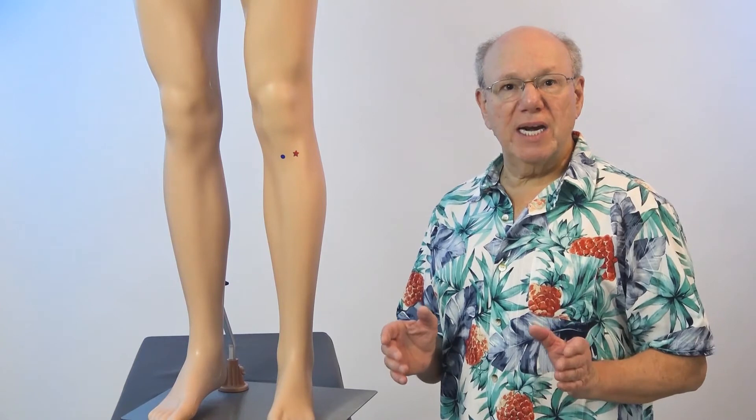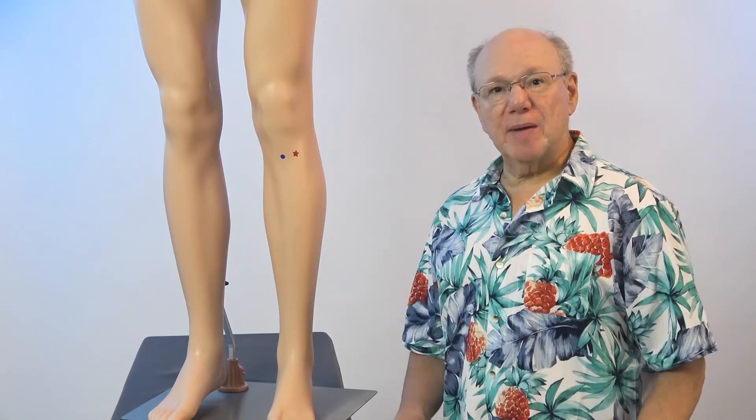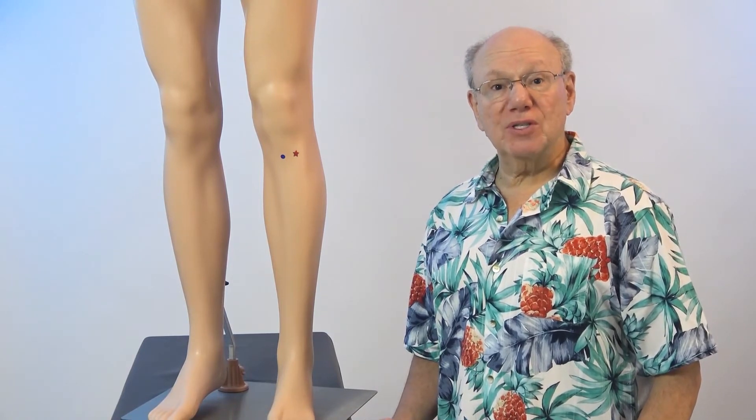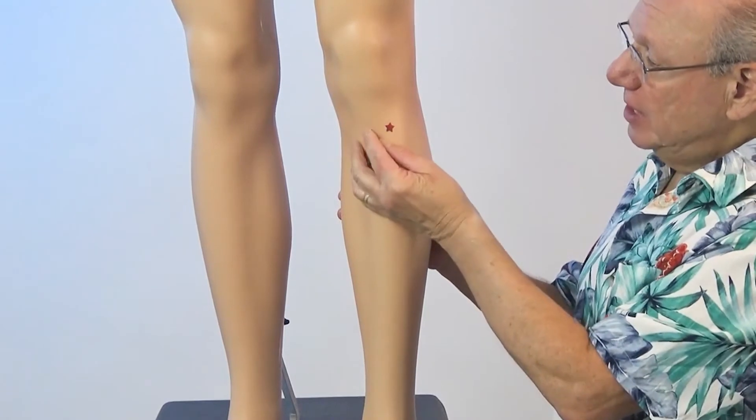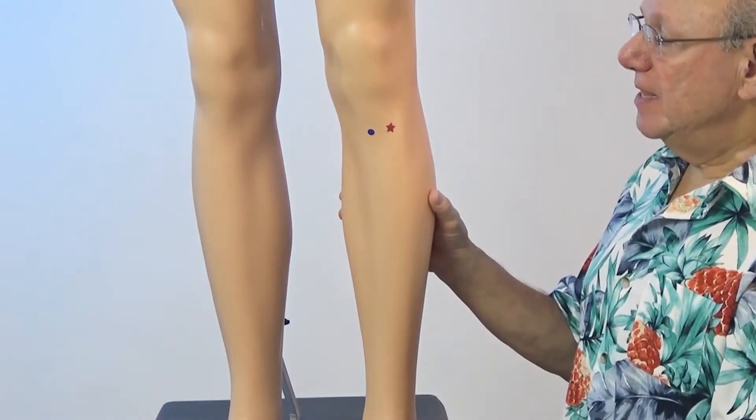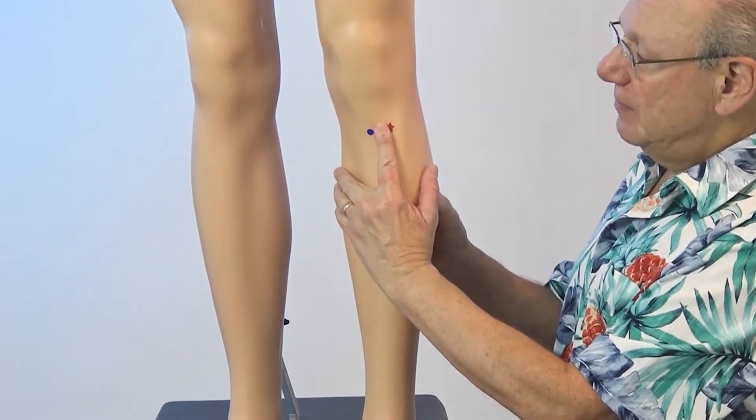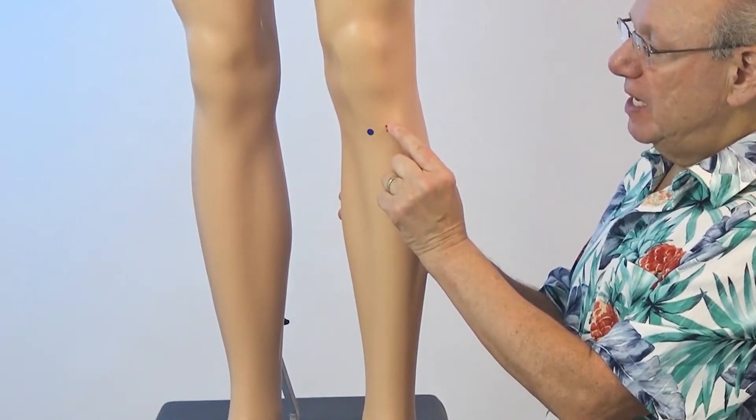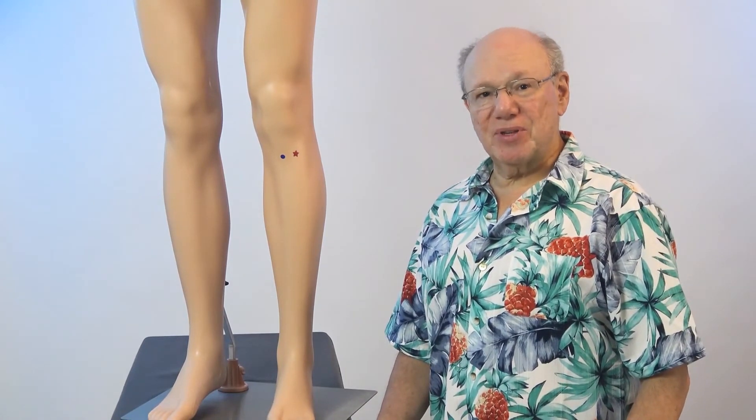Stomach 36 is located the width of four fingers below your kneecap. To locate Stomach 36, find the point that is the width of four fingers below your kneecap, right about here. Then find the point that is the width of your index finger to the side of that, right over here. Push in to find a point that is sensitive, sore, tender, or painful. That is Stomach 36.